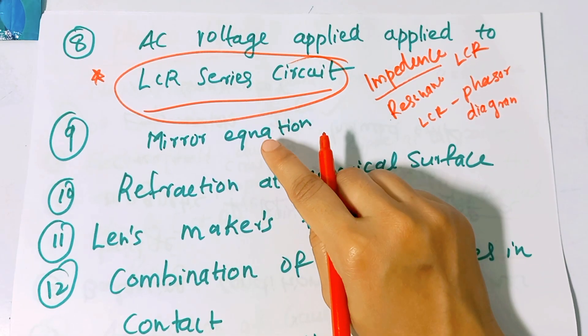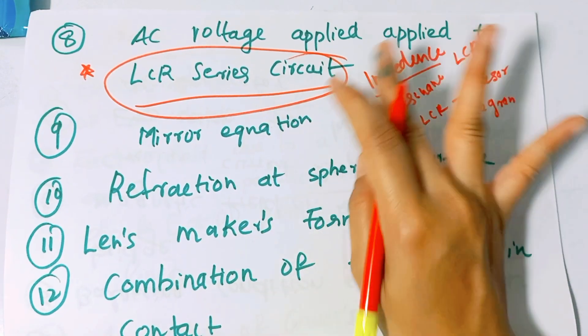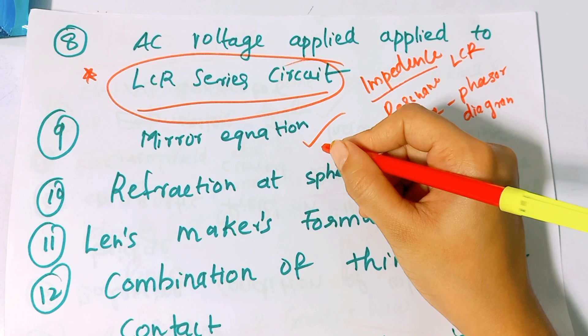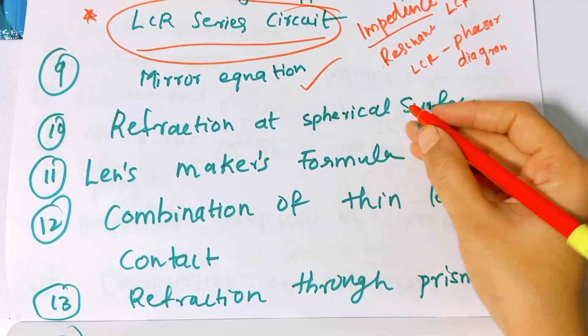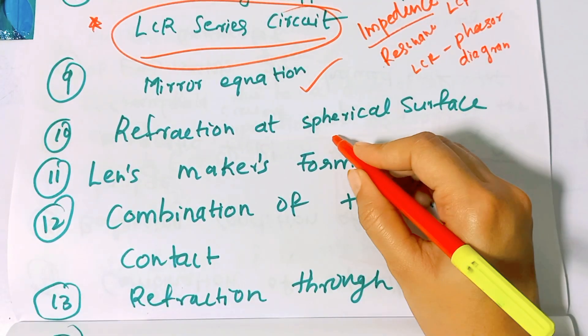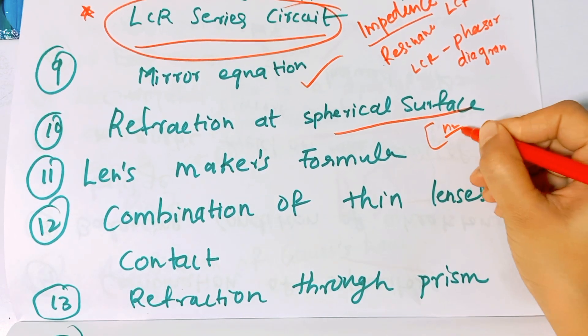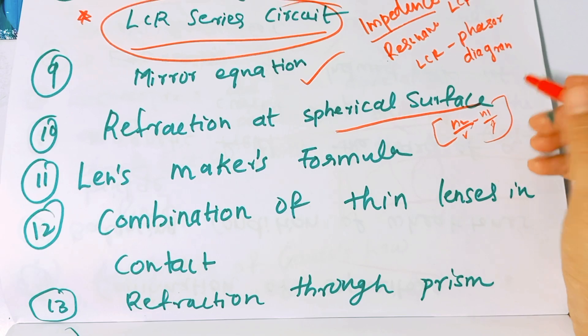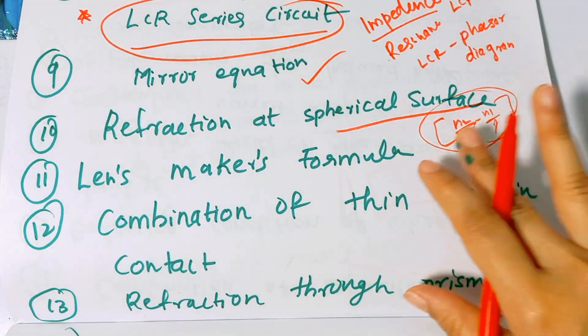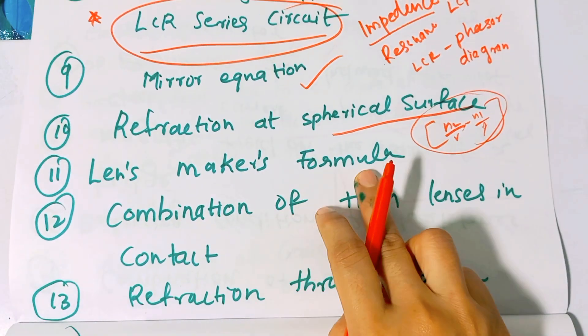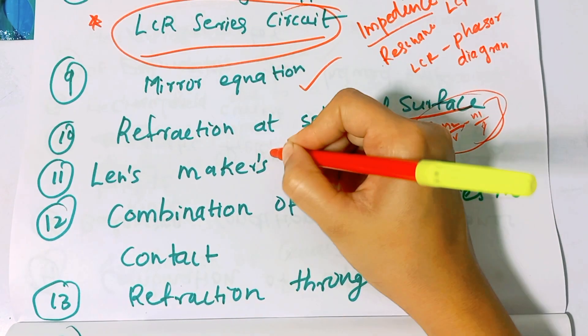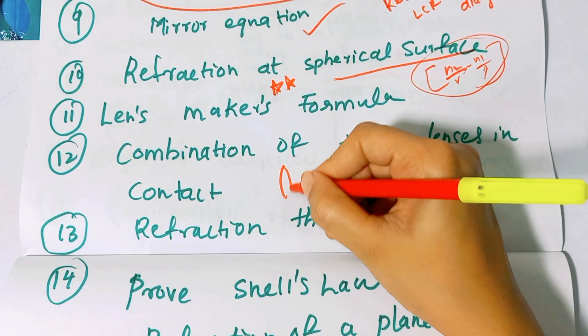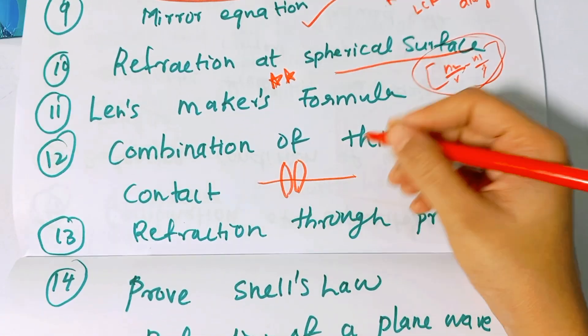In ray optics, there are several derivations: mirror equation, refraction at spherical surface with the expression N2/V minus N1/U equals N2 minus N1/R, lens maker's formula which is very important, and combination of thin lenses in contact.